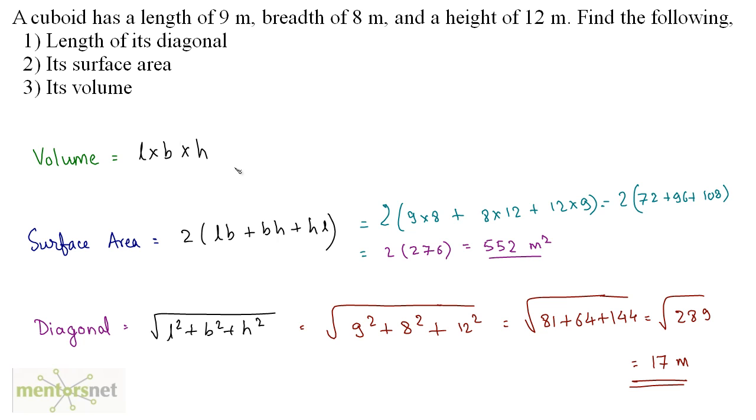Let's calculate the volume now. It's simple, LBH. So we have 9 times 8 times 12, and that will give you 864. So this is how you solve questions. Pretty easy, huh?